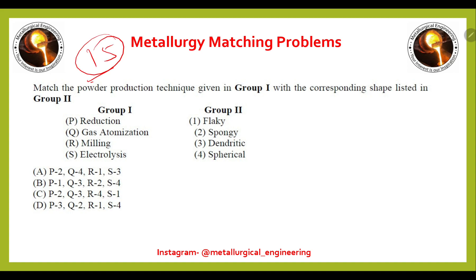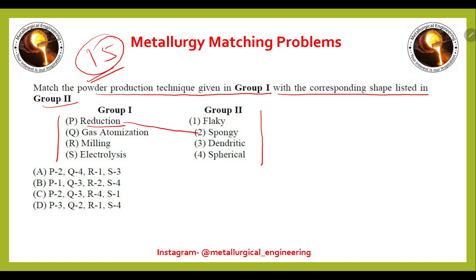This is the 15th matching problem on powder production techniques matched with corresponding particle shapes. Reduction gives spongy shape, gas atomization gives spherical, milling gives flaky, and electrolysis gives dendritic shapes. The right answer is option A.